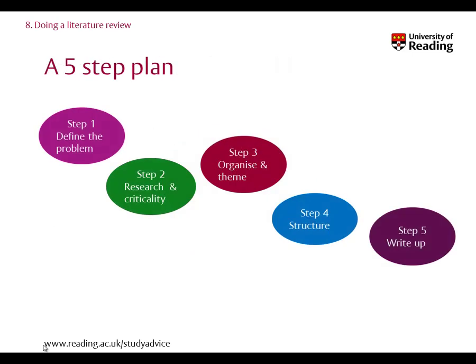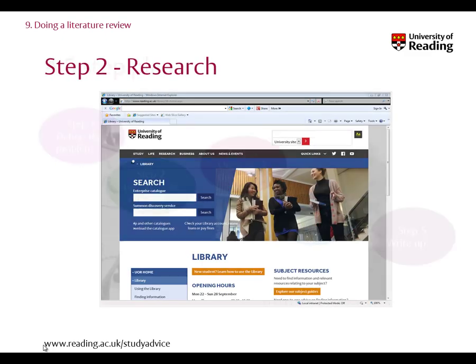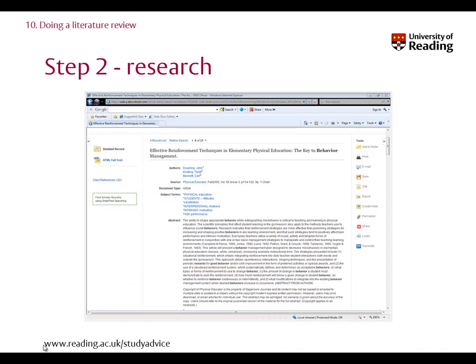Step 2: Find the research and read critically. You are now ready to start the research. Using the definitions of the problem that you've identified, you could start your search by looking at the library catalogue, using some of these as keywords. Once you have a number of articles, you will need to derive from them the information you need for your review. Consider what the key findings are and whether the evidence confirms your point of view or provides a counter argument. It's important at this stage that you take clear and effective notes, carefully noting the reference and page number, as you'll need to refer back to these later.